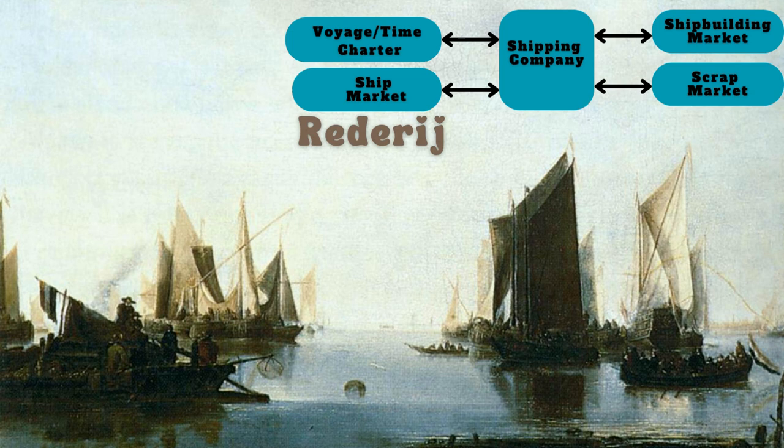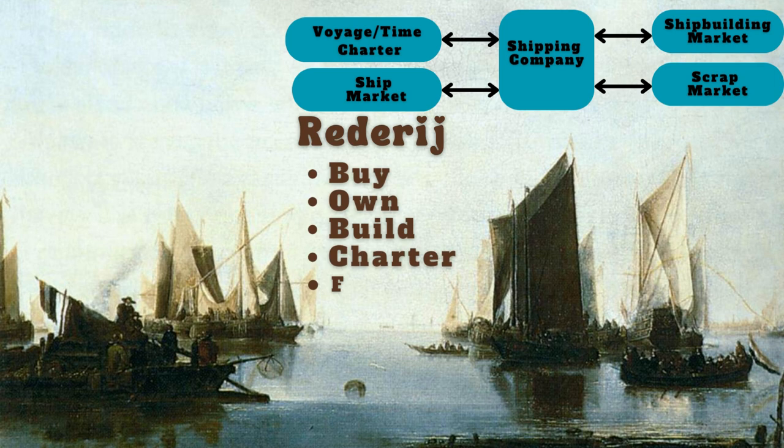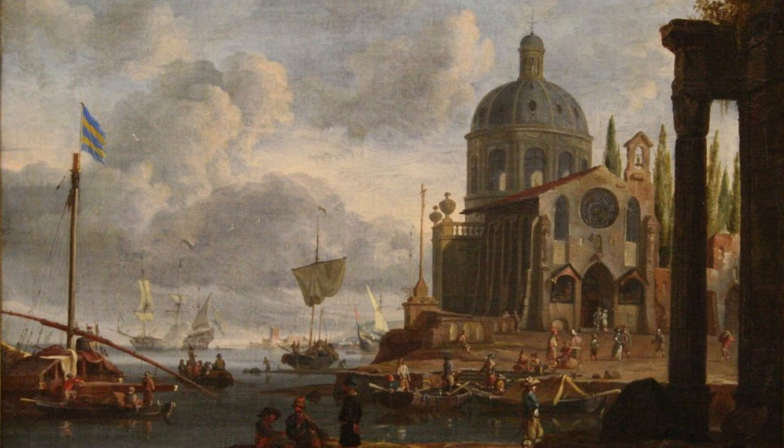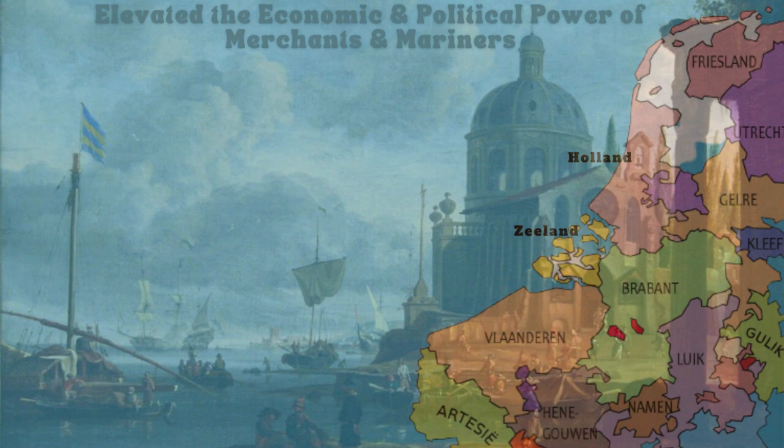A characteristic feature of the seaborne trade in the northern Netherlands was the Rederij, a flexible cooperative shipping enterprise where a group of people would buy, own, build, charter, or freight a ship and its cargo. This practice facilitated widespread investment in shipping and related industries with a wide diffusion of ownership, integrating the mercantile and maritime communities. This elevated the political and economic power of merchants and mariners, particularly the wealthier members.